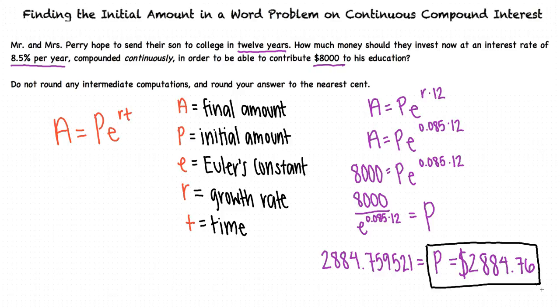So, to find the initial amount in a word problem on continuous compound interest, we first use the formula for continuous compound interest and create a model using the information given to us. We then solve for the initial amount.